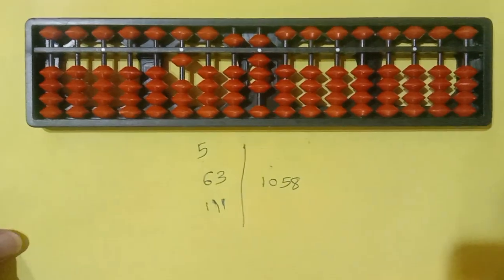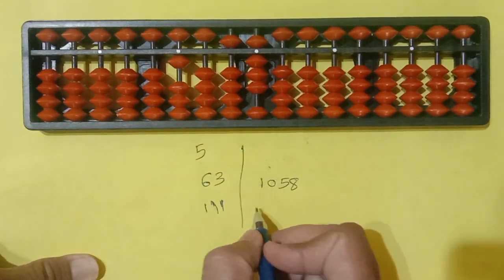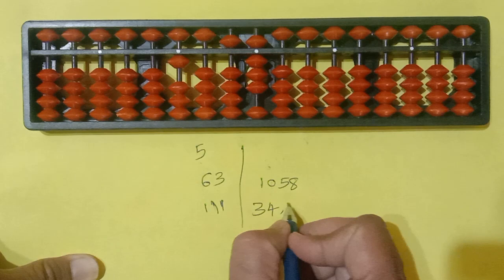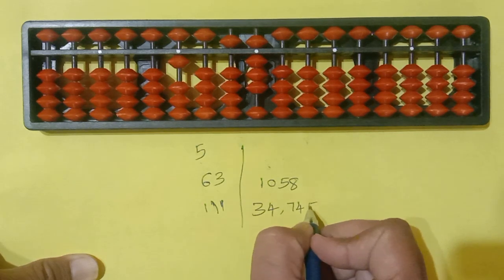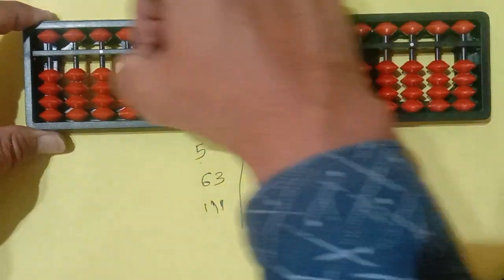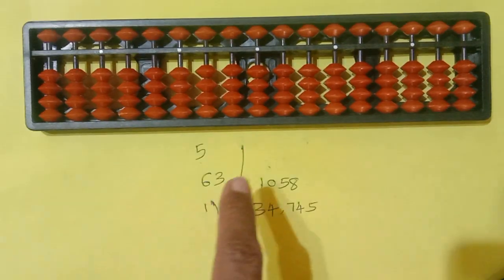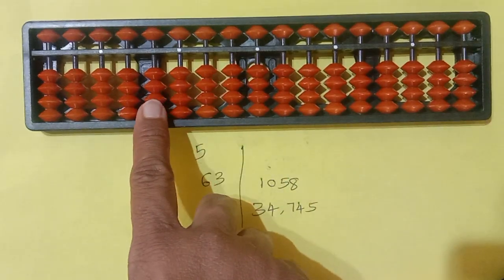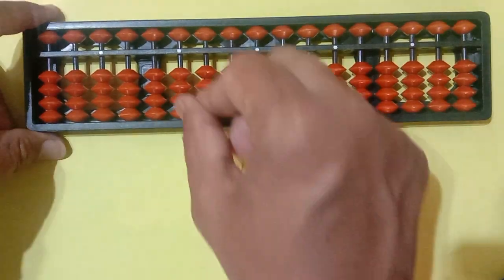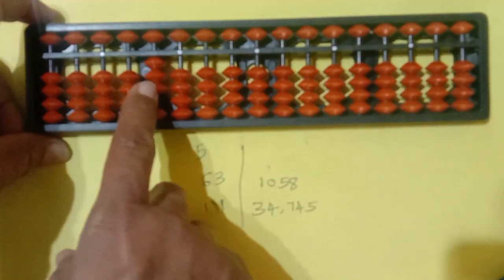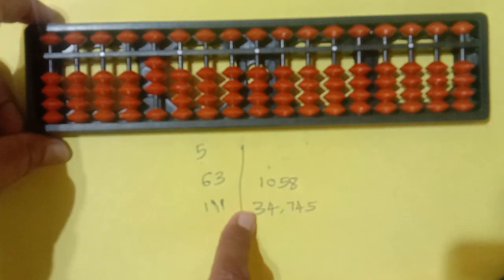So then just take 5 digit number. Now 34745 you can take. So first we have to make it clear. Then in 10,000 place, once 10, 100, 1000, 10,000. In 10,000 place, we have to make 3 beads. 3 beads means it is 30,000.